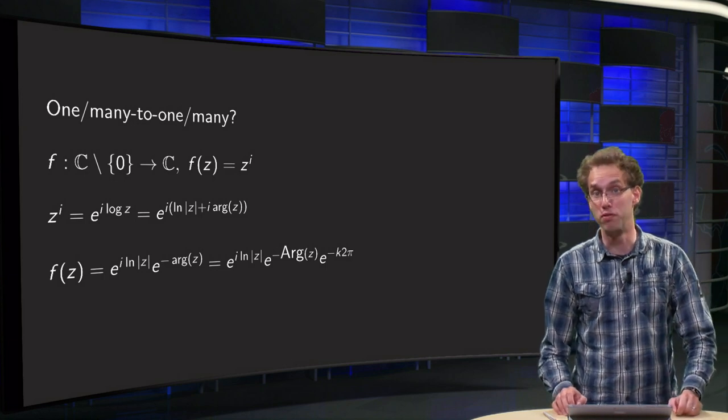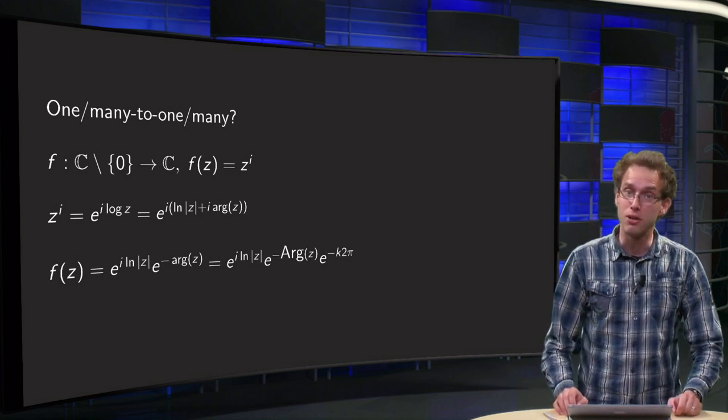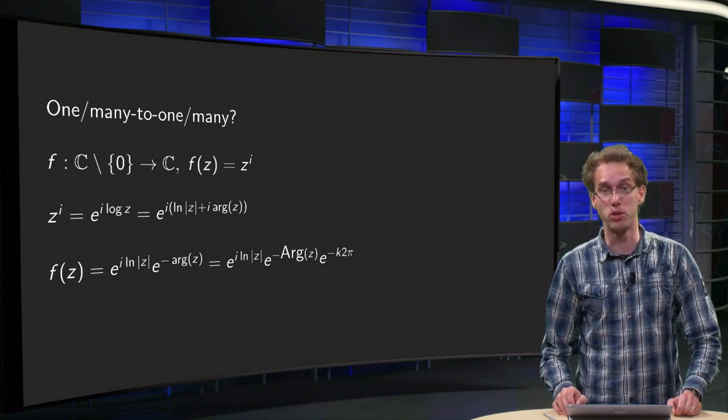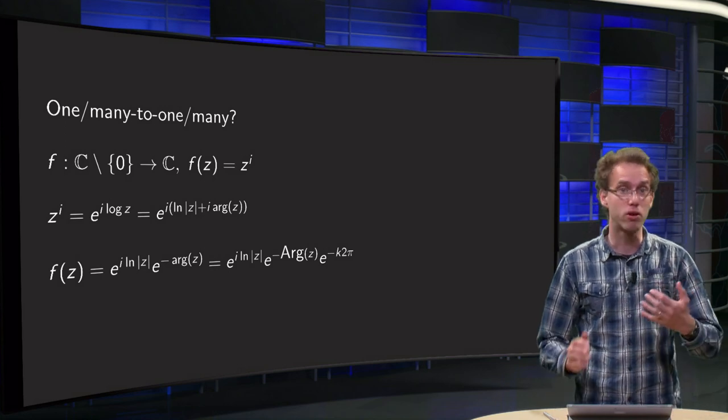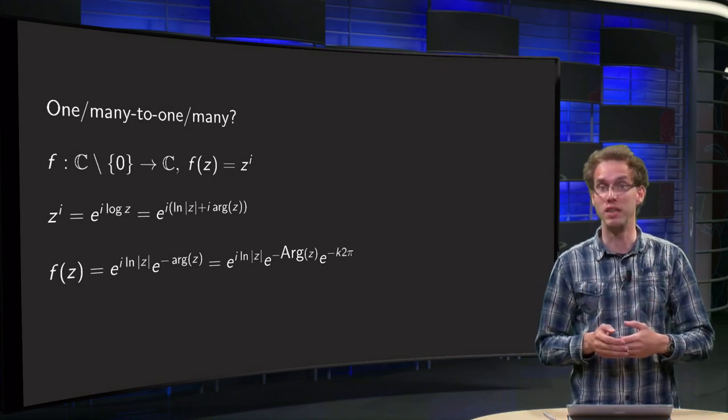We need 1-to-1 to be able to invert functions. In our calculus course you have learned how to use a horizontal line test to establish whether a function is 1-to-1 or not. However, for complex functions we cannot do that, so we need something else.